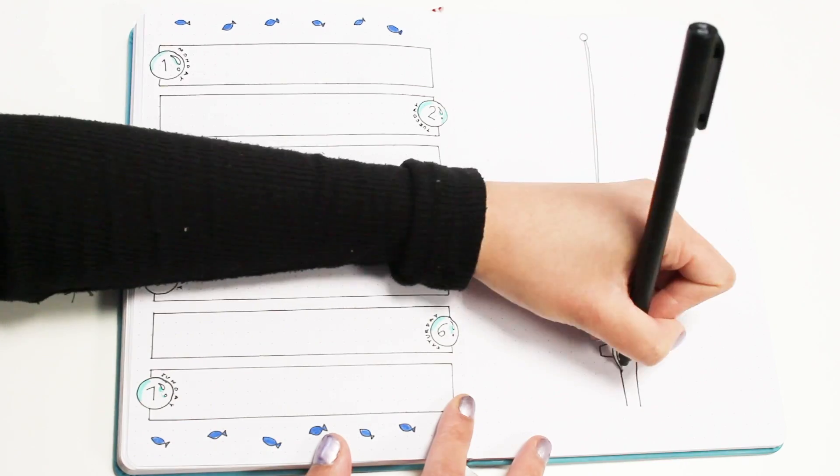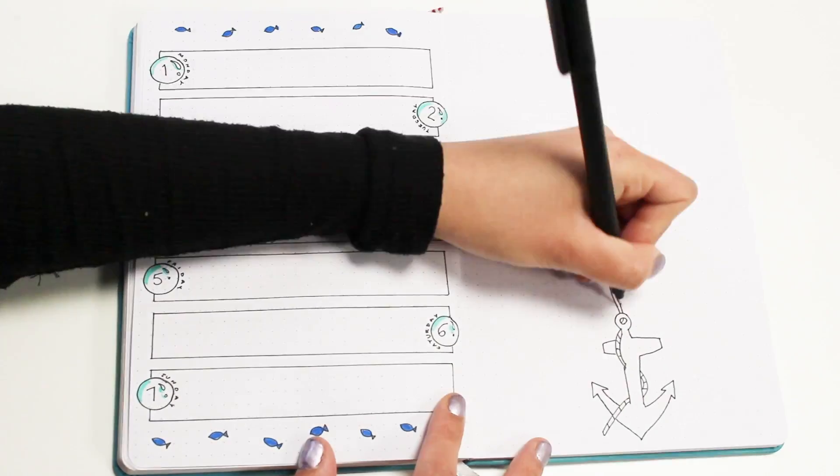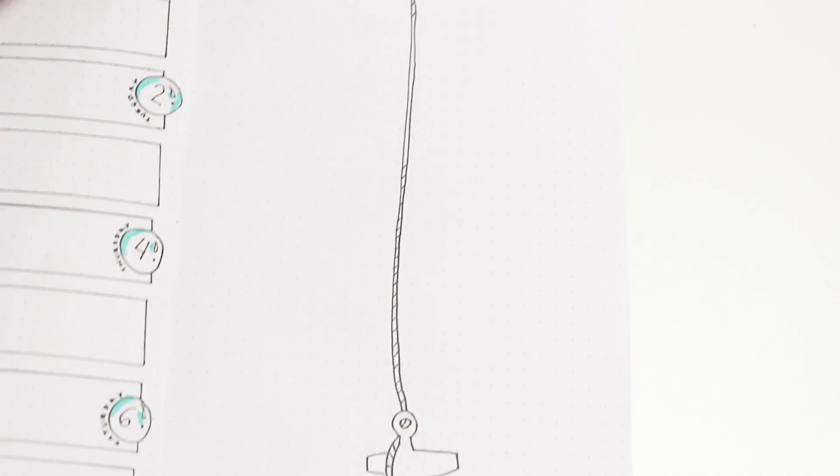For my second week, I'm just dividing the page in half with a drawing of a rope with an anchor at the bottom, and then I'm just writing the days of the week.